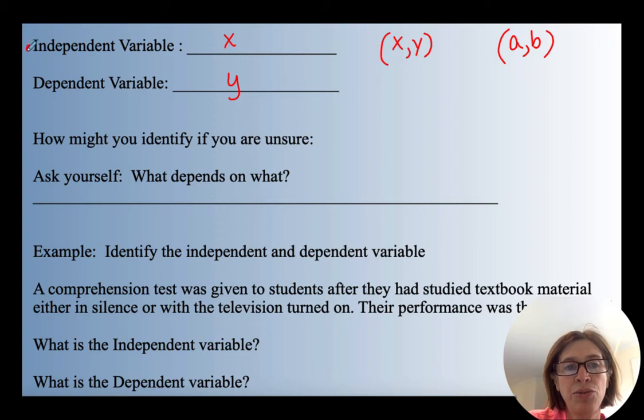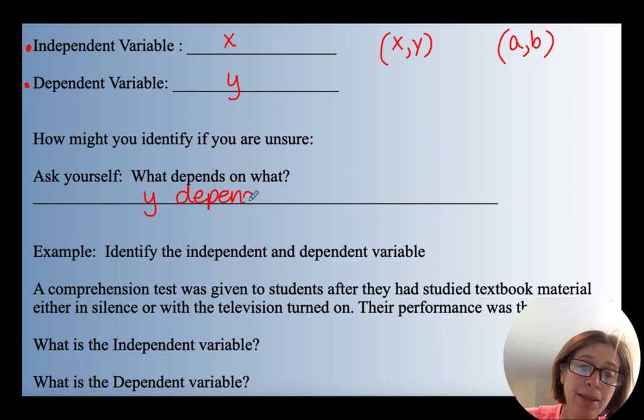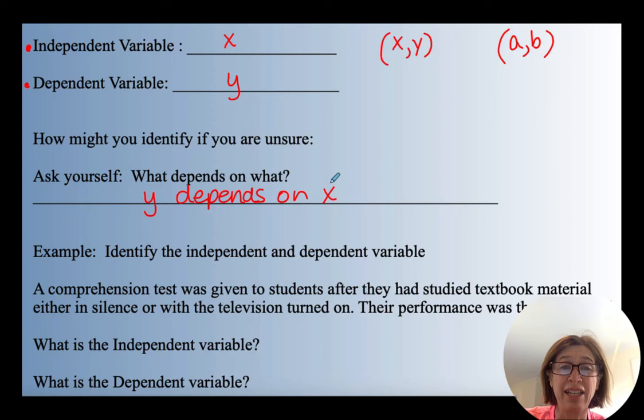So why is it important to identify an independent and a dependent variable? Well, the y being dependent means it depends on whatever x is. So when I'm trying to identify which one's the x and which one's the y, I ask myself, what depends on what? Because y always depends on x. So you have to ask yourself, what's changing and what's not changing?